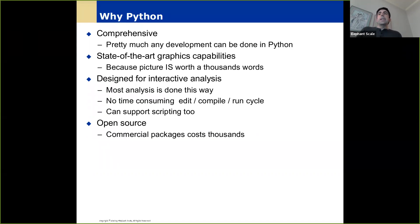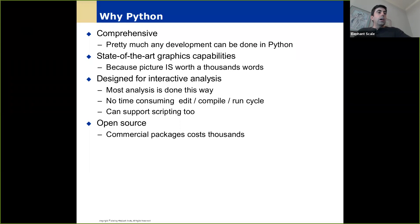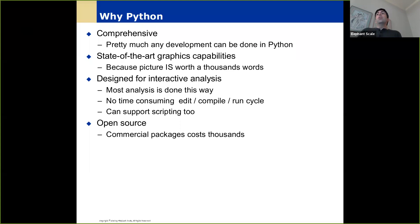You might be wondering why you'd want to choose Python when there are other languages out there. You might already know Java, R, or another language. Certainly all those different languages are going to be useful in their own way. It's not necessarily that you have to use Python, but it is true that probably the majority of people who work with machine learning, particularly deep learning, do so in Python.